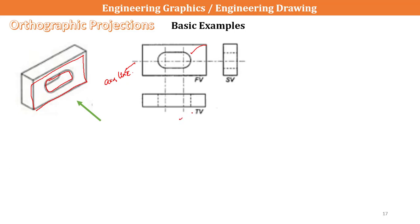The top view: when I am seeing from this surface, I can see a rectangle, and there is an elliptical hole — for this elliptical hole, two dotted lines are represented. Similarly, from the side view, when I see from this particular face, dotted lines represent the hidden features in the side view.